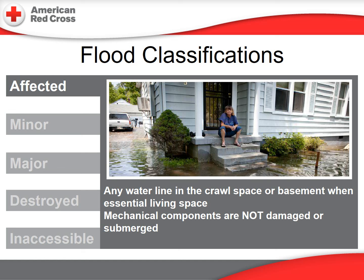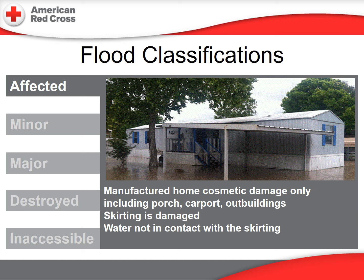This home would be classified as only affected. The water level may have entered the crawl space or even a basement, but it has not entered an essential living area of the home, and no mechanical components appear to have been damaged or submerged. This manufactured home has only cosmetic damage, which may include the porch or outbuildings. The skirting is slightly damaged, but water is not in contact with the skirting.